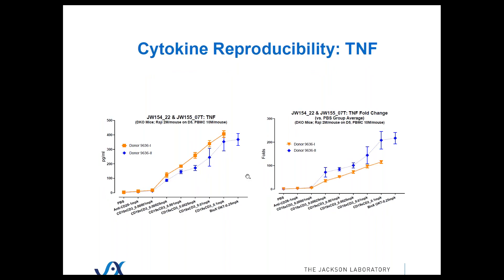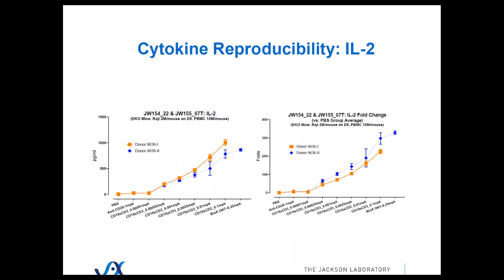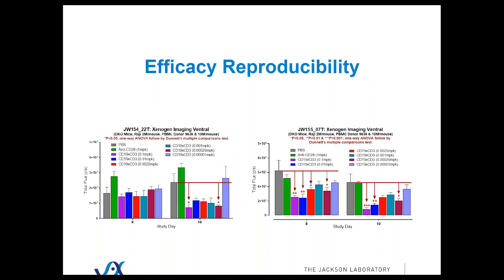Same results, same experiment. This is with TNF levels — they're both peaking out around 350 picograms per mL, and the fold increase. IL-2: once again, we're getting about 1,000 picograms per mL with this donor. And here's the efficacy — this is a side-by-side comparison of the TGI from these two different experiments. I think they're fairly similar, but you can reach your own conclusions.